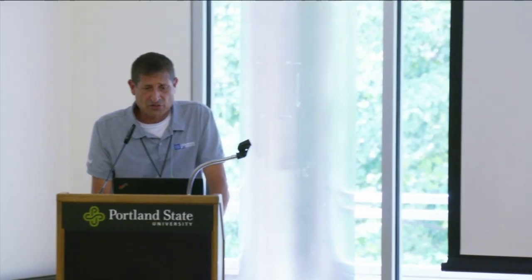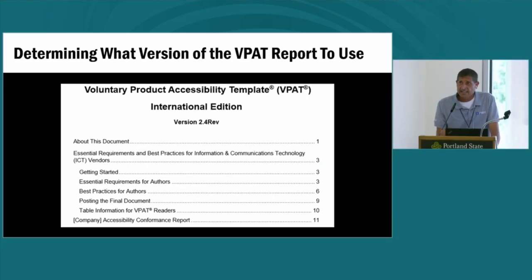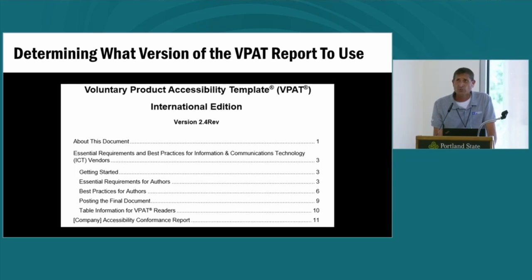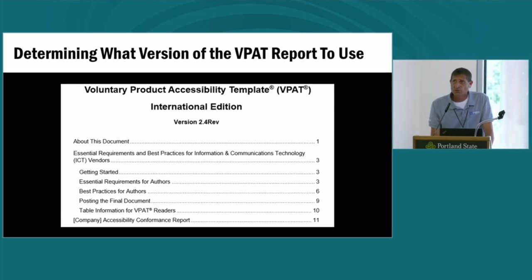There are several different versions of the VPAT depending on the specific accessibility standards you need to assess for: there are specific versions for Web Content Accessibility Guidelines, Revised Section 508 standards, EN 301 549 European harmonized standards, and then there is an international version which incorporates all of these standards into a single report template. Ultimately, the decision about which version to use boils down to your target audience and what specific industries and markets are priorities to you.